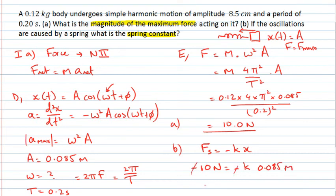So, rearranging this equation here, I can find my spring constant k is 10 divided by 0.085, which gives me 118 newtons per meter, which is the correct units for my spring constant.